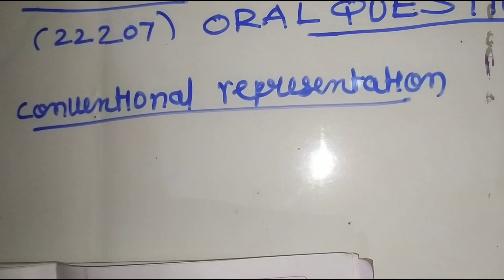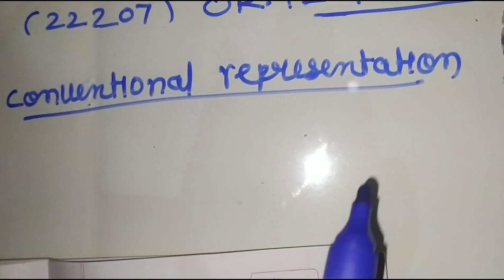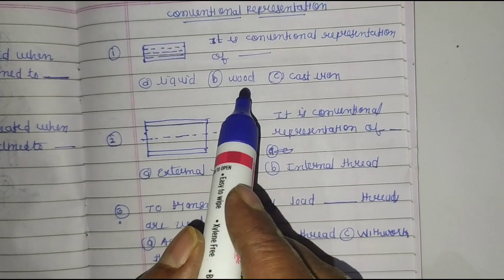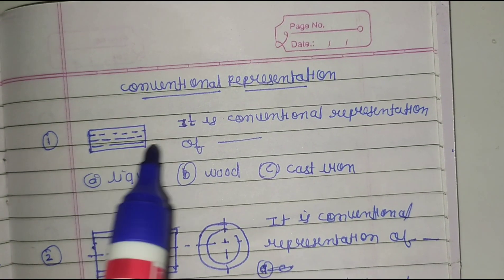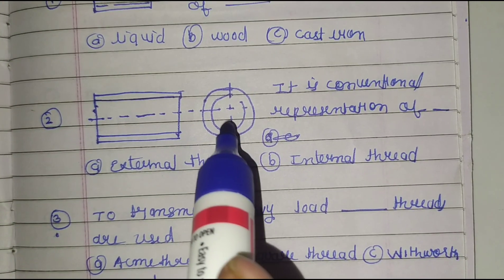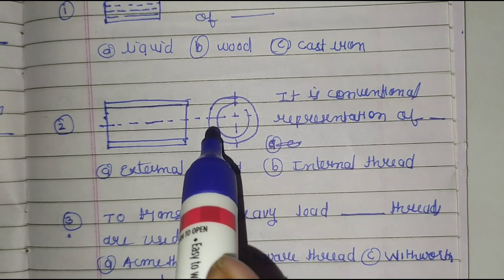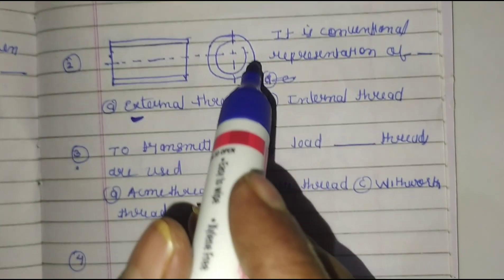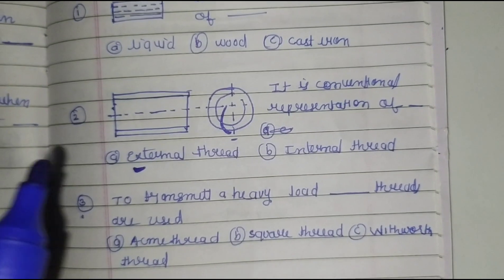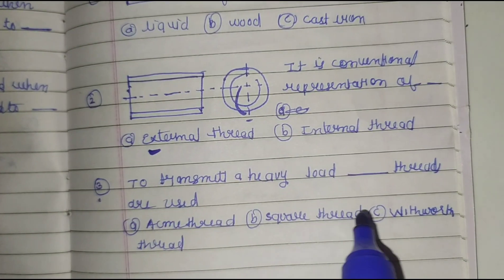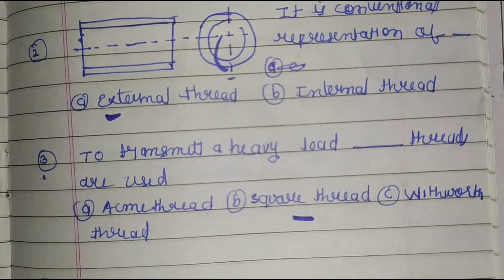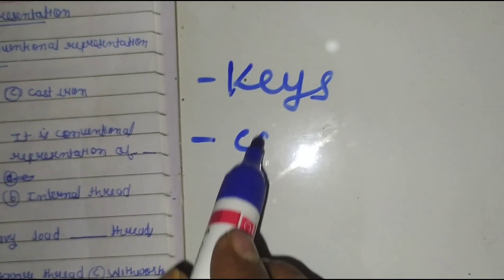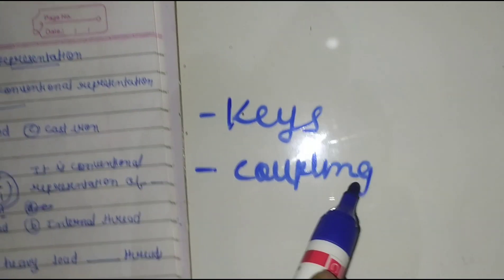Now we will have a discussion on conventional representation. They have given a symbol — it is the conventional representation of liquid, wood, and cast iron. The outer circle full and inner circle three-fourths is the conventional representation for external thread. The outer circle three-fourths and inner circle full is for internal thread. To transmit a heavy load, square threads are used. Questions can also be asked about keys and couplings. Thank you.